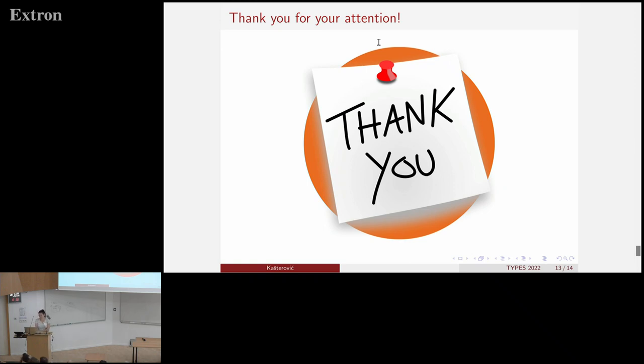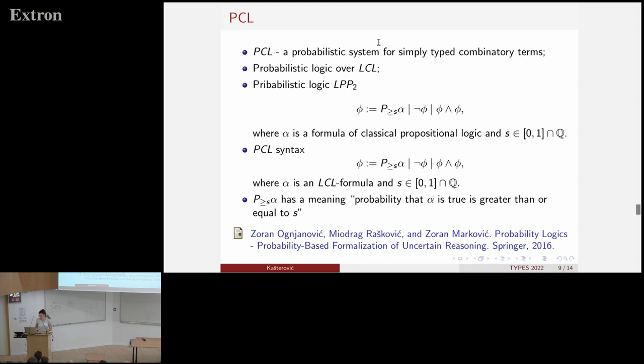Okay, yes. So basically, in this PCL system, one of the statements would be like probability that M has type sigma is greater than S. But of course, alpha is not just M has type sigma, it can also be different type statements connected with propositional connectives, like probability that if M has type sigma, then N will have type tau and so on. And for start, we decided to work with simple types just to keep things as simple as possible. But we are interested to see what will happen in some more expressive systems.